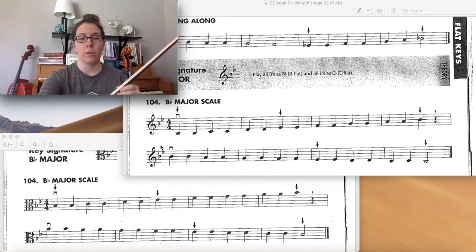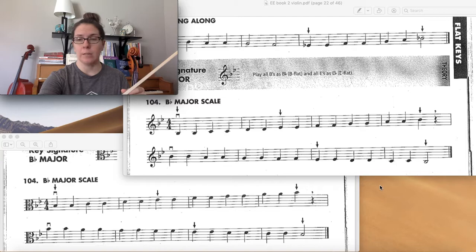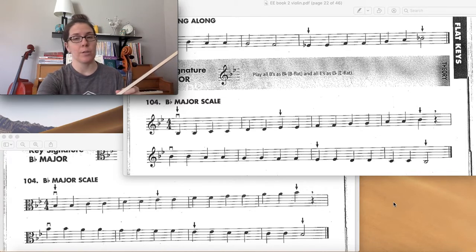So again we're going to start on a low 2 and our low 1s are going to be here on E-flat and then up at the top of the scale on B-flat. Then it'll be the same fingers on the way down.